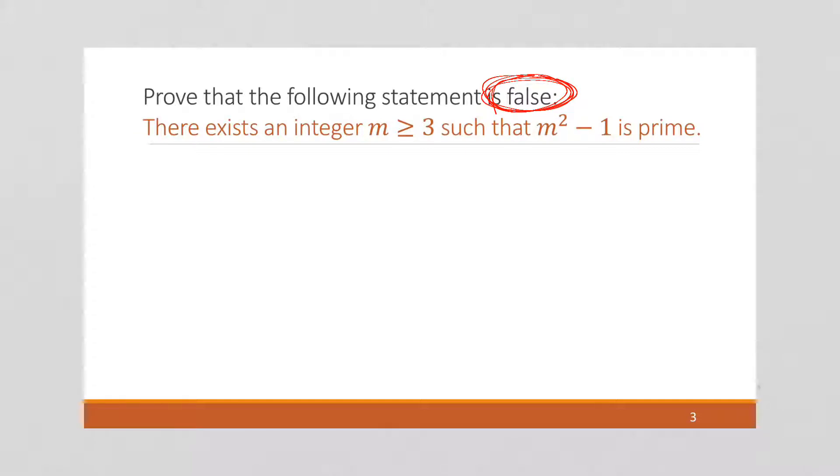Well, that's interesting. Recall that statements are either true or false. That's the definition of a statement. And everything we've been proving have been statements. So this is a statement. Notice this is an existential statement, not a universal statement, but it is still a statement, which means it is either true or false.